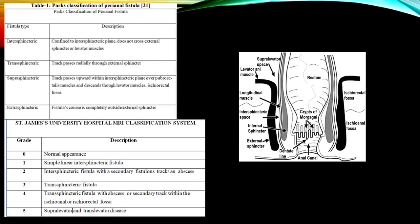We have two classification systems: the Parkes classification and the St. James University classification. The Parkes classification has four types: intersphincteric, transsphincteric, suprasphincteric, and extrasphincteric. While reporting, we use the St. James University MRI classification and grade fistulas accordingly.